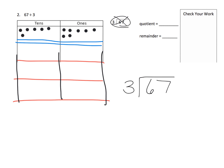The idea with the place value disks is we take these six tens and sort them equally amongst the three groups. When we do that we get 1, 2, 3, 4, 5, 6 — nothing left over — so we've used all six of our tens. How do we record that? We have six tens sorted into three groups, which means two go in each group. We've used all of our tens and have no tens left over. That's where we connect our place value with the standard algorithm.